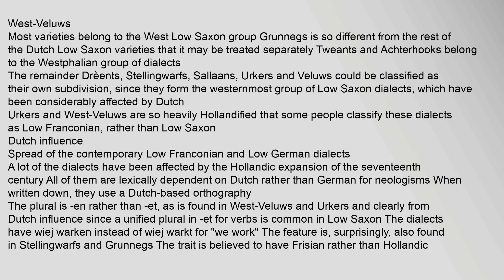A lot of the dialects have been affected by the Hollandic expansion of the 17th century. All of them are lexically dependent on Dutch rather than German for neologisms. When written down, they use a Dutch-based orthography. The plural ending is '-en' rather than '-et,' as found in West-Veluws and Erkers, clearly from Dutch influence, since a unified plural in '-et' for verbs is common in Low Saxon. The dialects have 'wiej warken' instead of 'wiej warkt' for 'we work.' This feature is also found in Stellingwarfs and Gronings, and is believed to have Frisian rather than Hollandic origins.